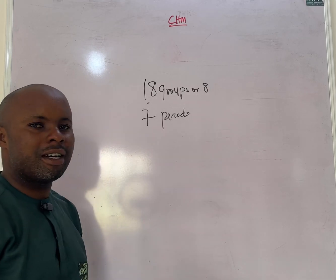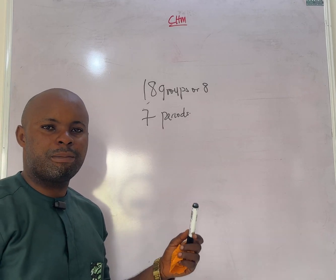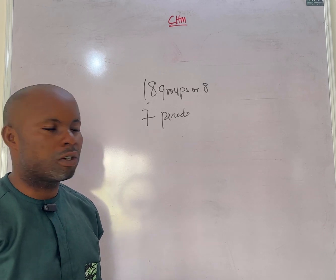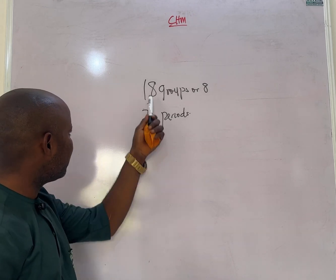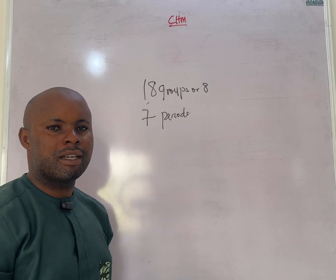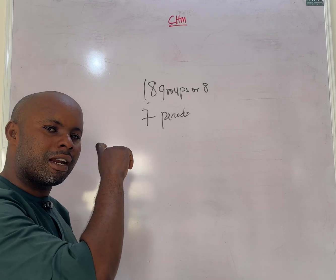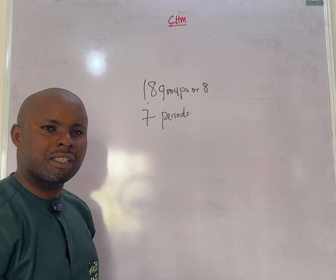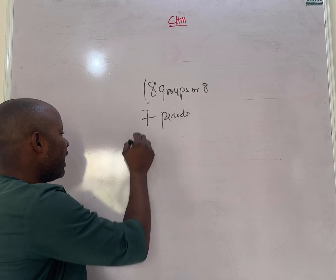These elements are arranged on the periodic table using the atomic number, which is the number of electrons or protons in an atom. Each element placed in the same group shares the same chemical properties, while those placed in the same period share the same physical properties.